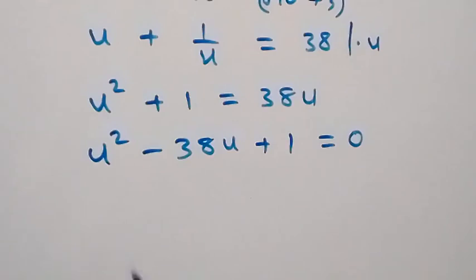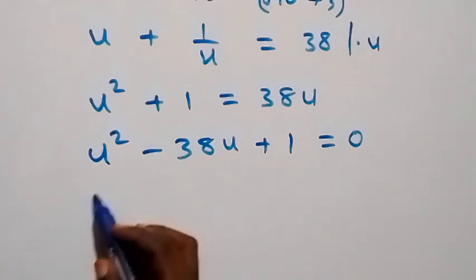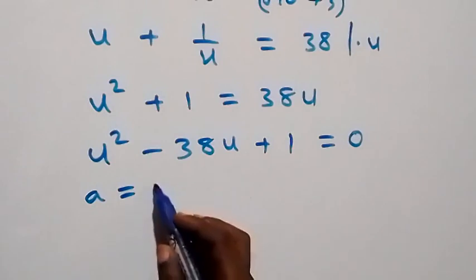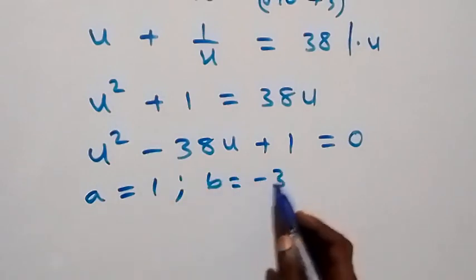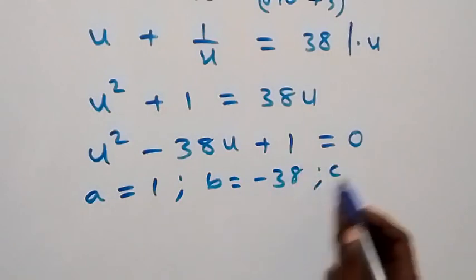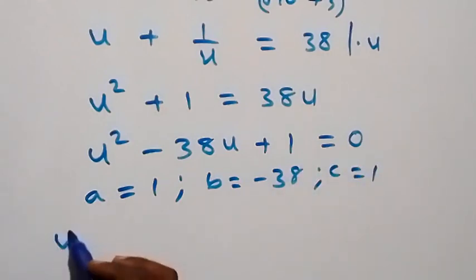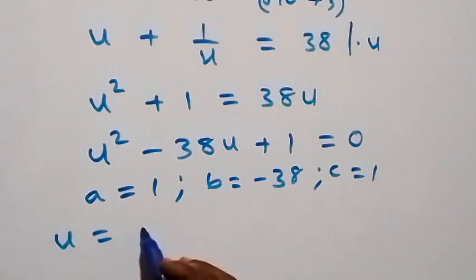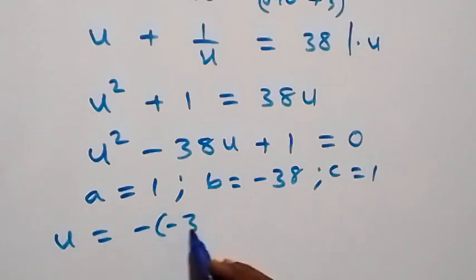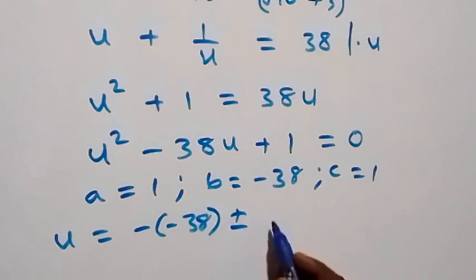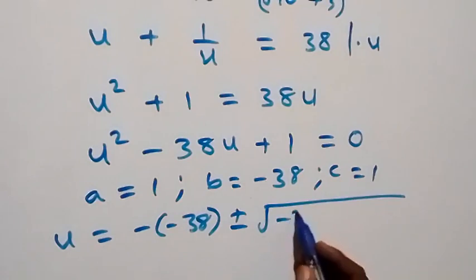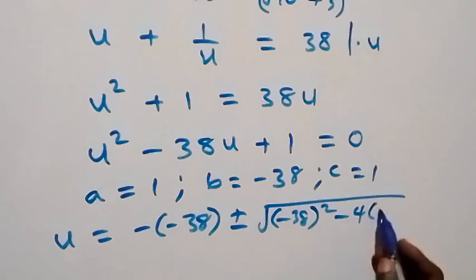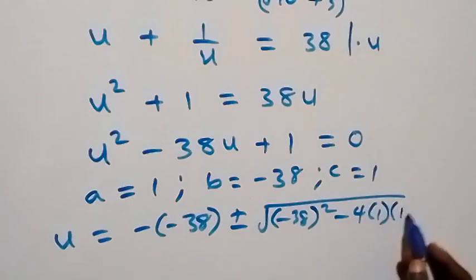From here, when we compare this with the general form of a quadratic equation: a is 1, b is minus 38, and c is 1. Applying the quadratic formula, u will now be equal to minus (minus 38) plus or minus square root of (minus 38) squared minus 4 times 1 times 1, over 2 times 1.